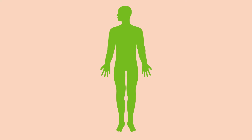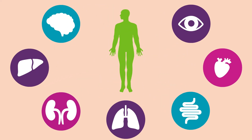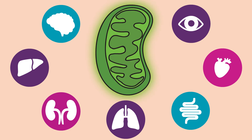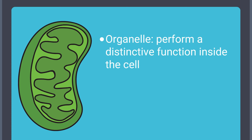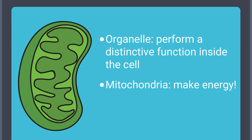Our organs are made of trillions of cells that work together to energize our lives. Every cell needs energy, and this is where the mitochondria come in. Mitochondria are organelles, which are special components of cells that have specific functions. The primary function of mitochondria is to make energy — that's why we call them the powerhouses of the cell.